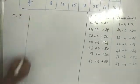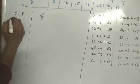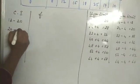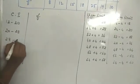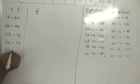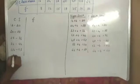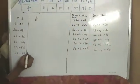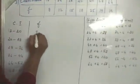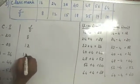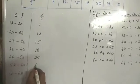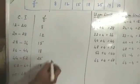Class interval and then frequency: 12 to 20, 20 to 28, 28 to 36, 36 to 44, 44 to 52, 52 to 60, 60 to 68. Frequency: 8, 12, 15, 18, 25, 19, and 10.